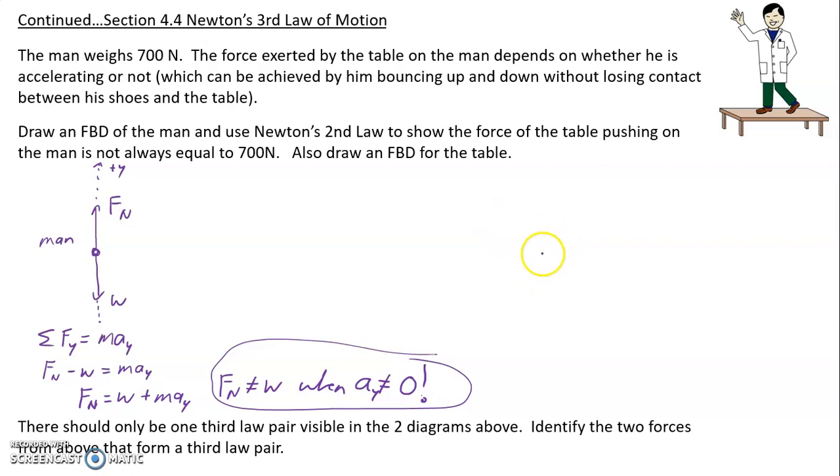Now let's draw a free body diagram for the table. The table has weight. Maybe the table has more weight than the man, so we'll draw that longer. Okay, that's the weight of the table. And then we'll just call that one plain w for the weight of the man.